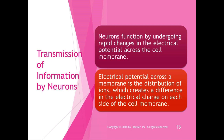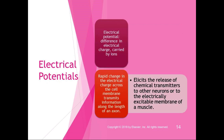Electrical potential across the membrane is established by the distribution of ions, creating a difference in electrical charge on each side of the membrane. Electrical potential is the difference in electrical charge, which is carried by ions. The difference in electrical potential when the membrane is not transmitting information is called the resting membrane potential.